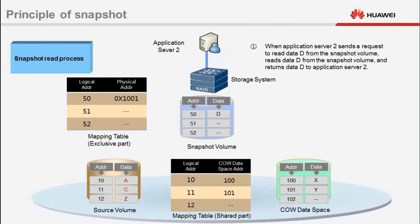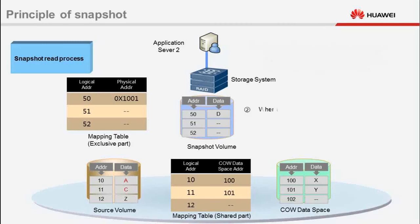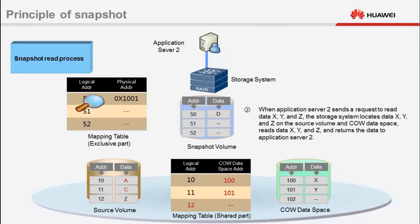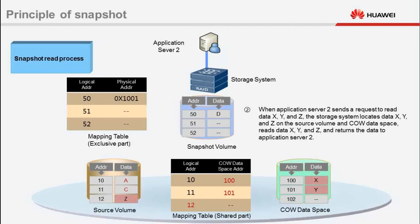When Application Server 2 sends a request to read data X, Y, and Z, the storage system queries the exclusive part of the mapping table. If the storage system finds that the desired data is not on the snapshot volume, the storage system queries the shared part of the mapping table, locates data X, Y, and Z on the source volume and COW data space, reads data X, Y, and Z, and returns the data to Application Server 2.